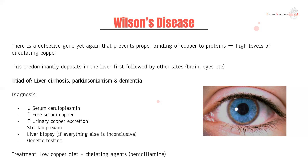It's this free copper that is free to deposit. The first place it tends to deposit is the liver, and only once the liver is saturated and you already have signs of hepatitis and cirrhosis does it deposit in other sites. The two main ones to know are the brain and the eyes. In the eyes, it presents with a ring of copper around the iris called a Kayser-Fleischer ring. It can be hard to see in patients with brown eyes.